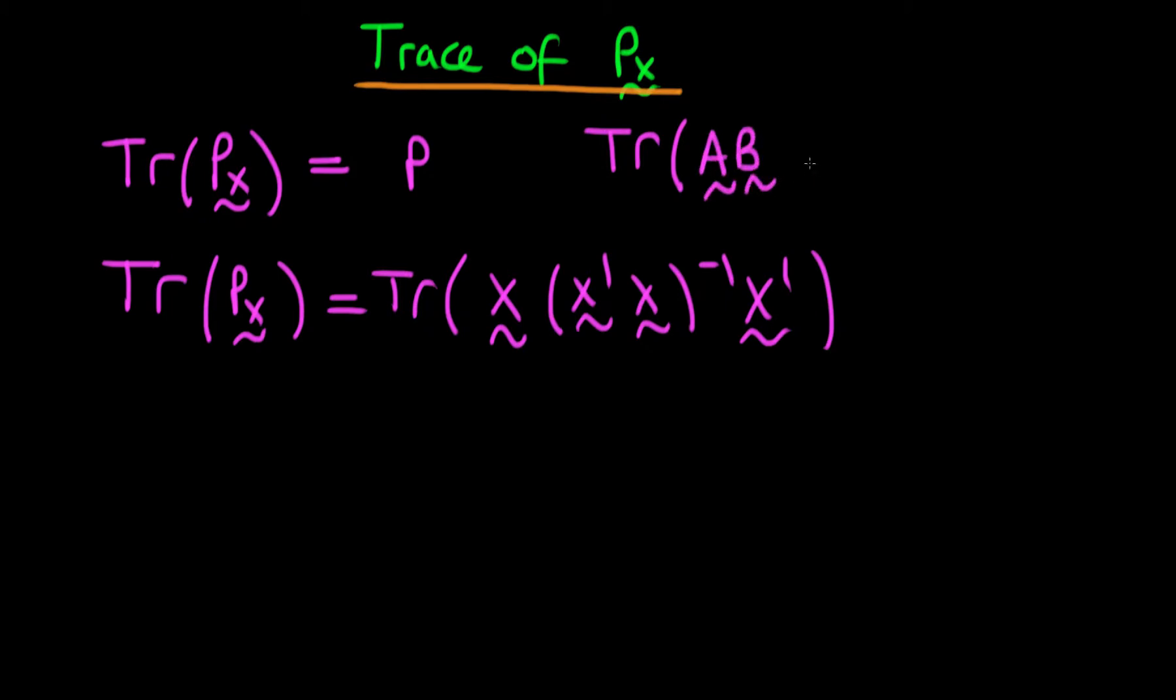In other words, the trace of ABC is equivalent to the trace of CAB, for example. So, as long as you permute things cyclically, the trace operation doesn't change.